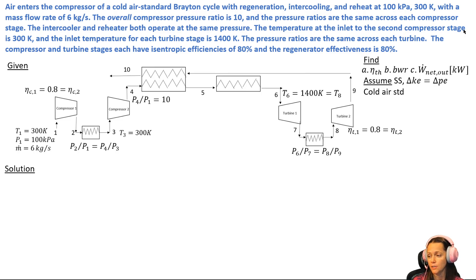The overall compressor ratio takes into account that we've got this multi-stage compression with intercooling, so they give us the pressure ratio between 4 and 1.